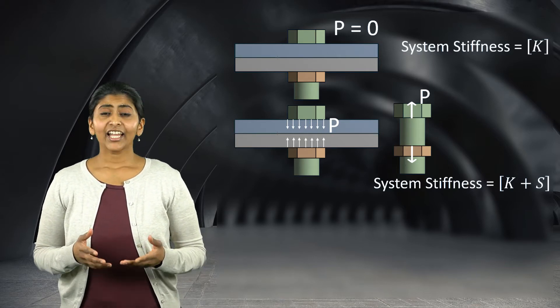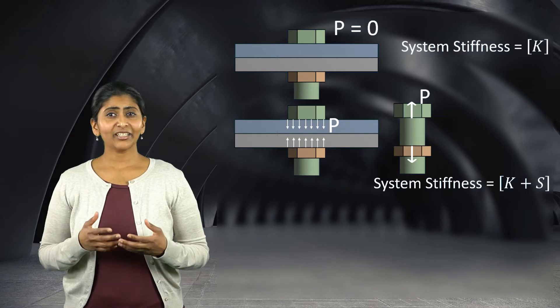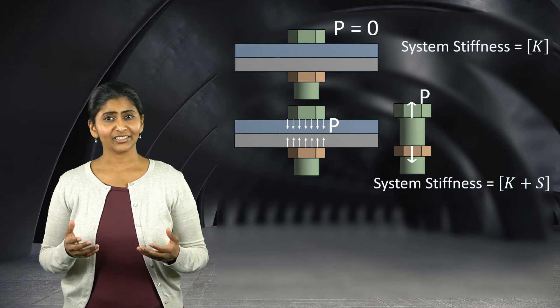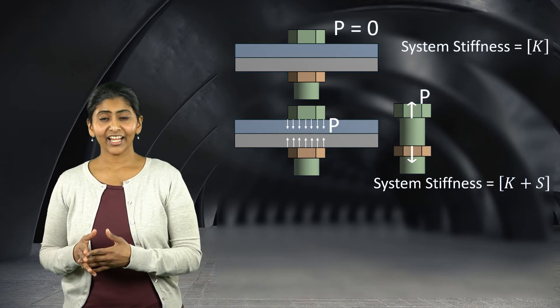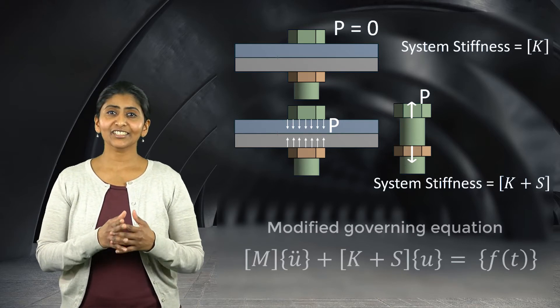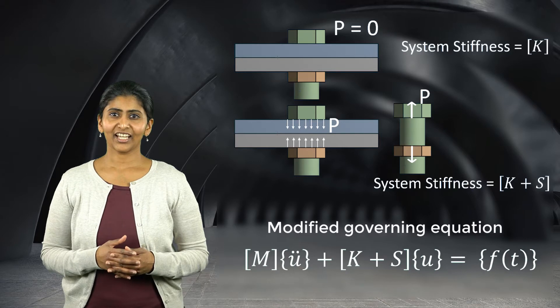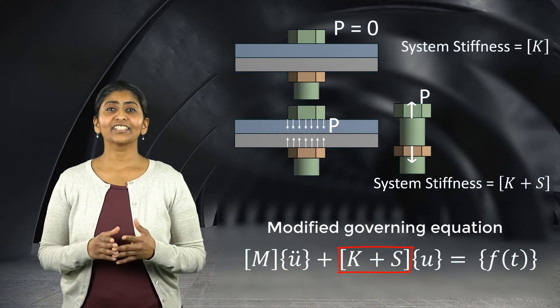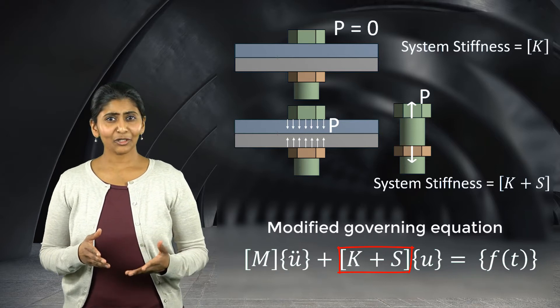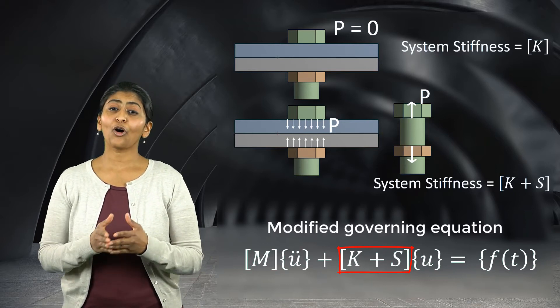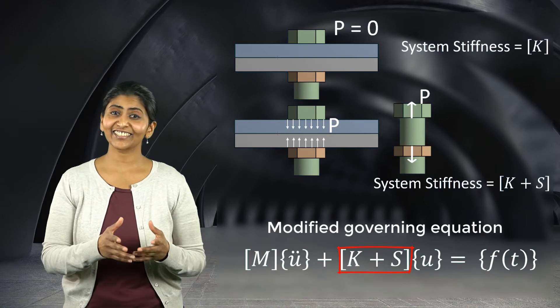In fact, even when we study dynamic characteristics of such system, stress stiffening matrix is first calculated and added to the initial stiffness of the system. This modified stiffness is used in calculating the natural frequencies and that's how the effect of pre-stress on dynamic characteristics is captured.